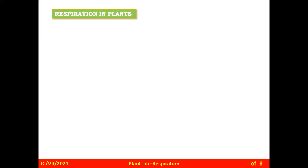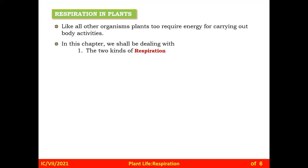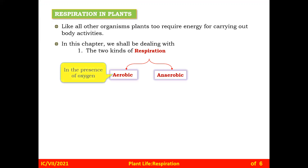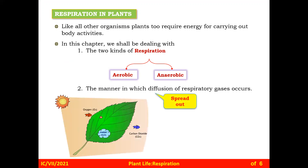Now, respiration in plants. Like all other organisms, plants require energy to carry out body activities. In this chapter we will deal with two kinds of respiration: aerobic respiration and anaerobic respiration. Aerobic respiration takes place in the presence of oxygen and anaerobic respiration in the absence of oxygen. Oxygen is taken in and carbon dioxide is evolved during this process.